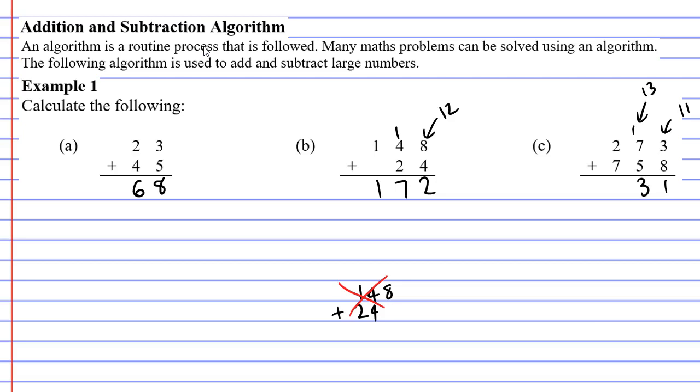Okay, so put the 3 down below and carry the 1, and 7 plus 2 is 9 plus 1 is 10. Now because this is the last column and we've got a two-digit number, we actually write the whole two-digit number down below. The answer to question C is 1031, and that is the end of our addition algorithm video.